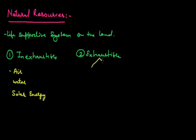Exhaustible natural resources are divided into two categories. First, we call them non-renewable resources, and the second one, we call them renewable resources.